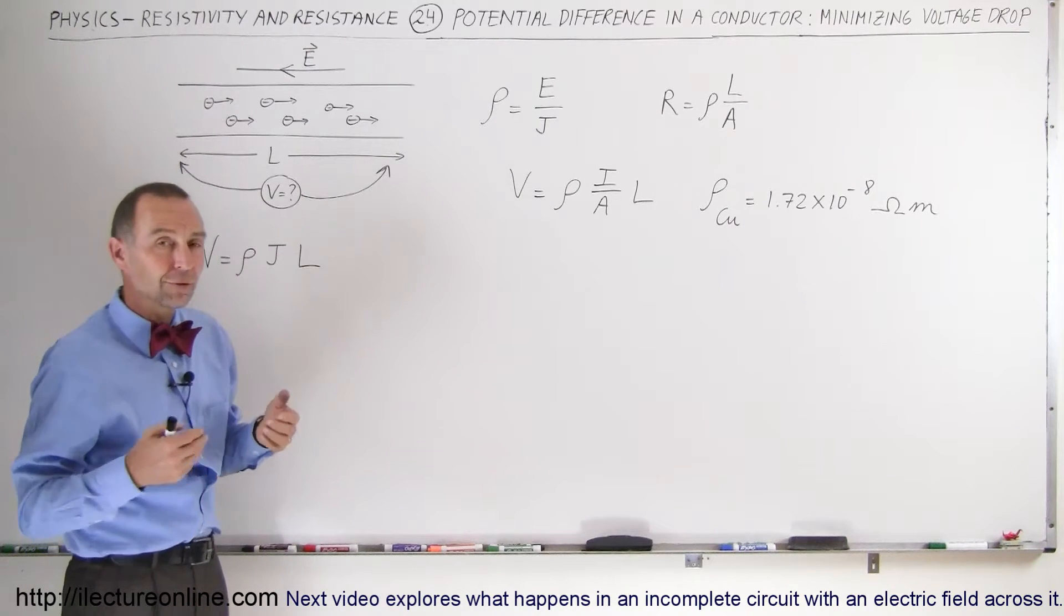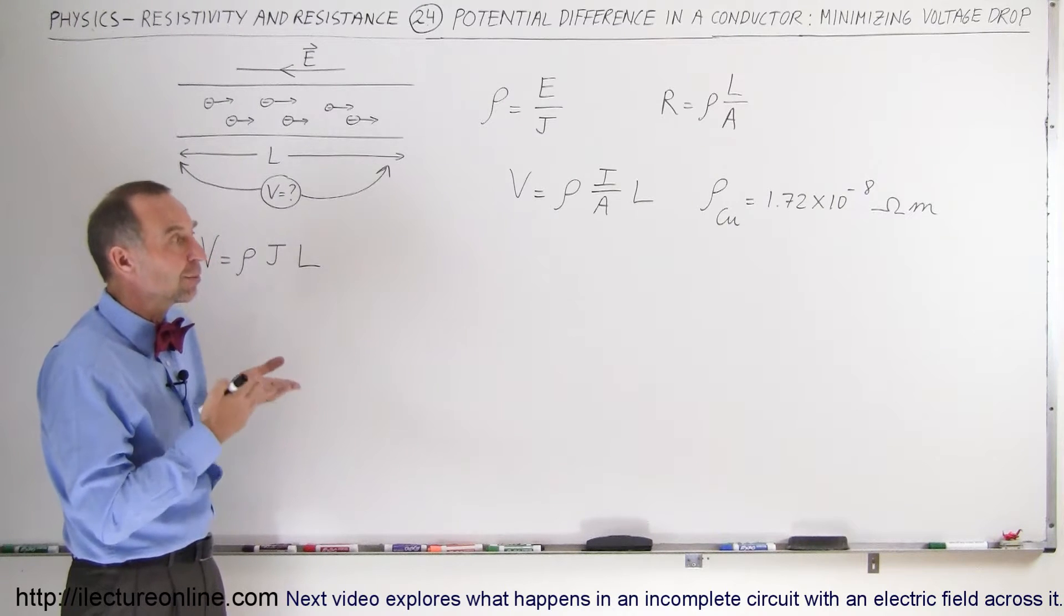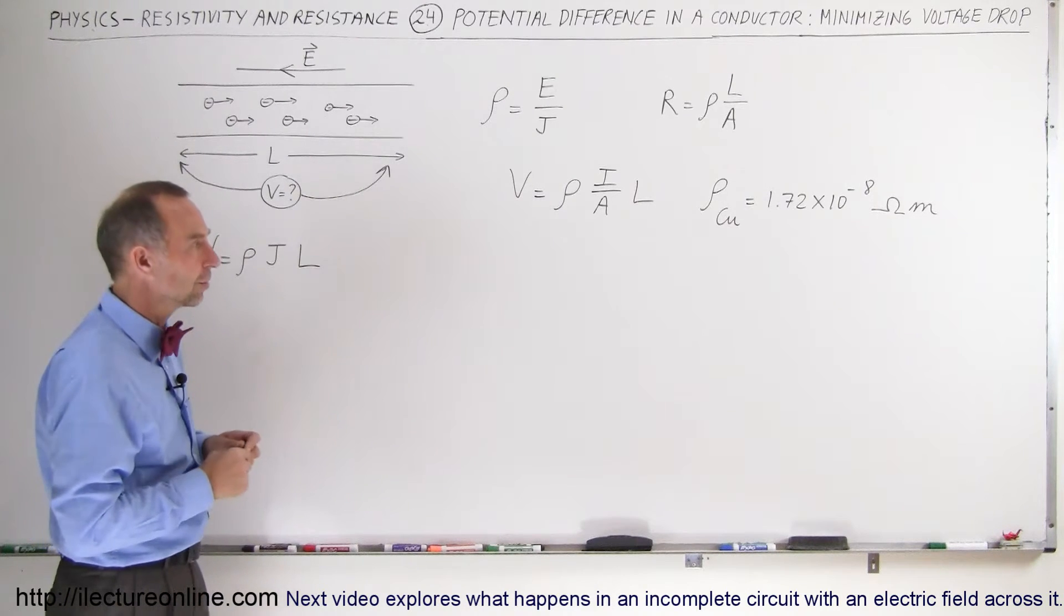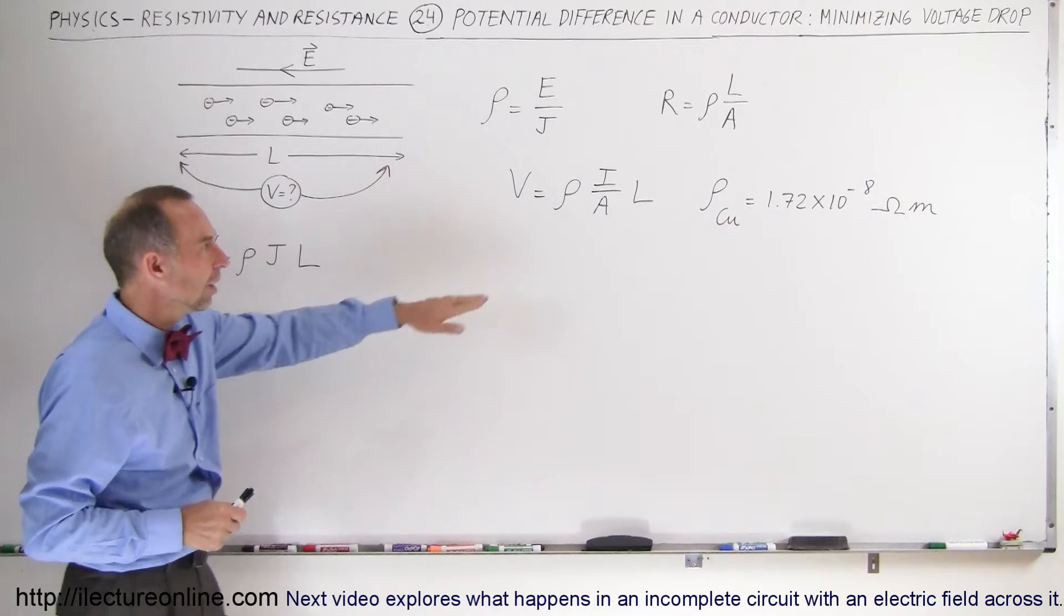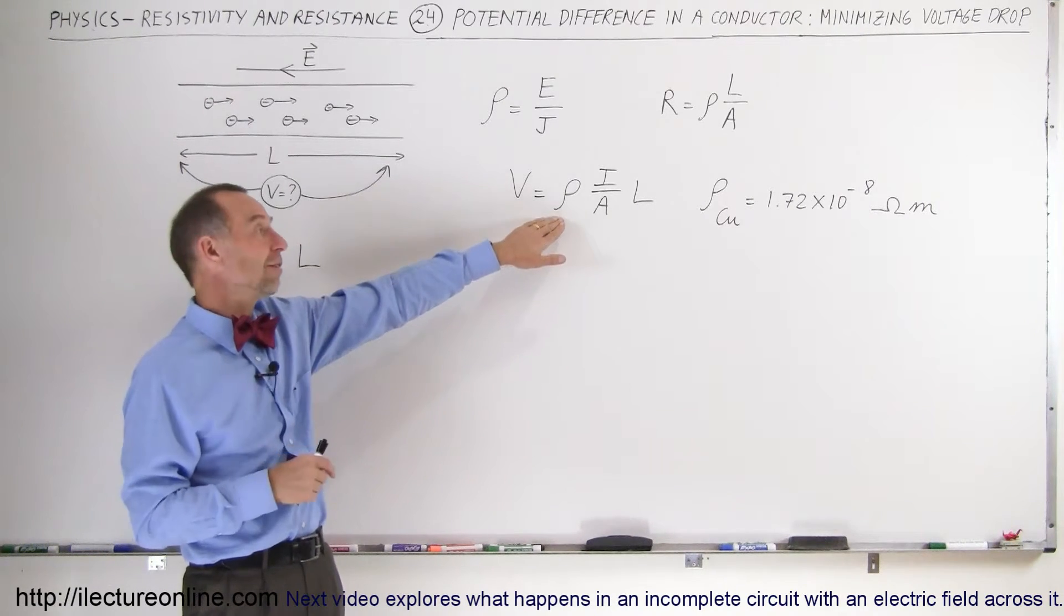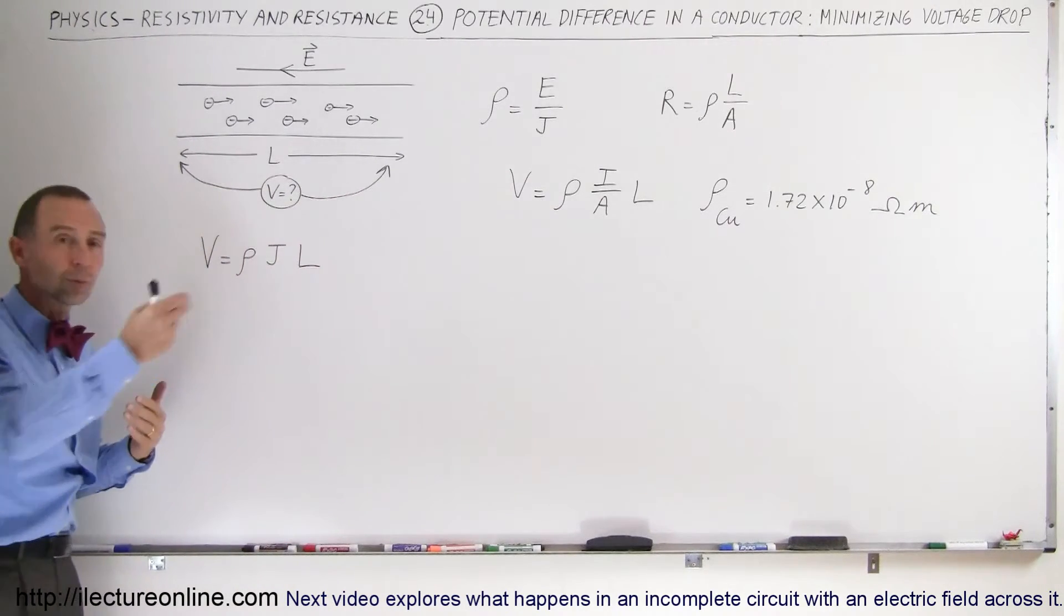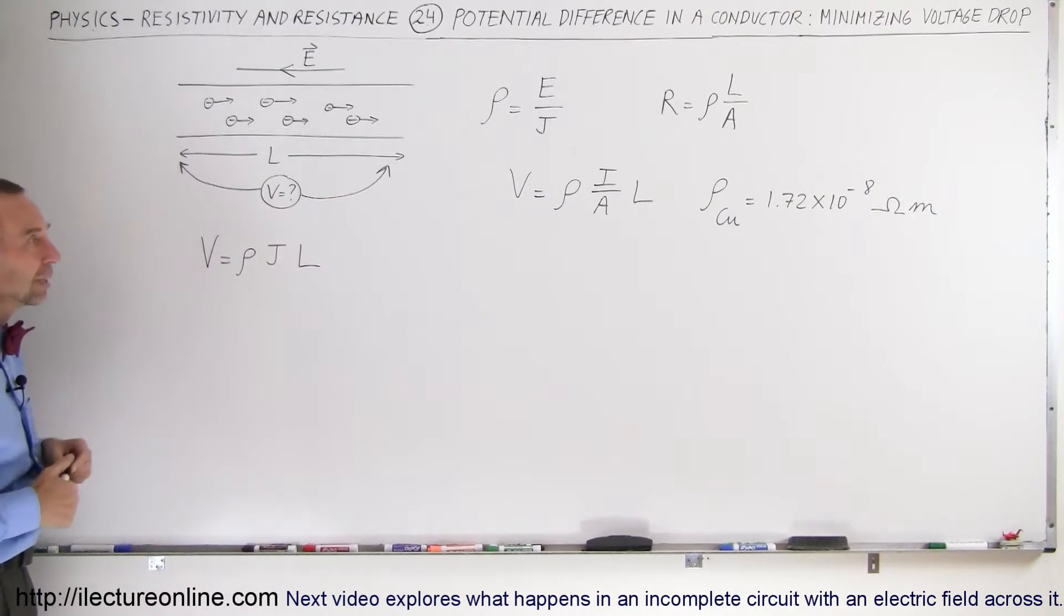Copper, for its cost and its weight, is probably the best material that we can use to conduct electricity. So copper wire is a very common substance to carry electricity. There's not a lot we can do about the resistivity, and there's not a lot we can do about the length. We're fixed to having a certain length required to get the electricity to where we need to go.